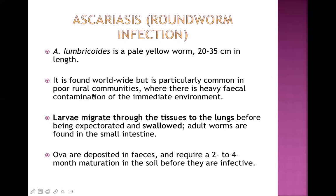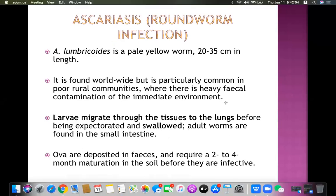Ascaris is found worldwide but is particularly common in poor rural communities where there is heavy fecal contamination of the immediate environment — areas with open field defecation. If a person is carrying adult worms in their intestine and passing lots of eggs, those eggs go directly into the soil. After some developmental stage in the soil, if those eggs contaminate food and water, they can be easily transmitted to another person.